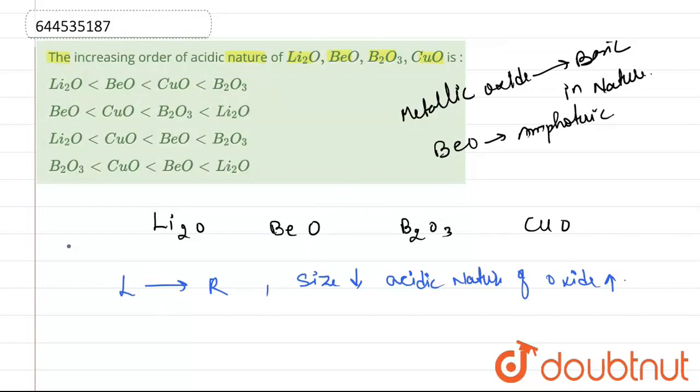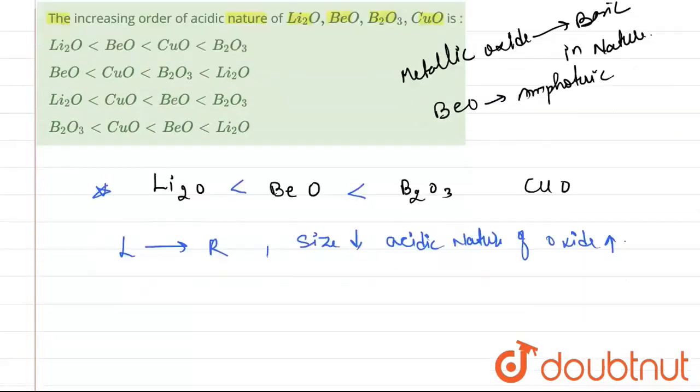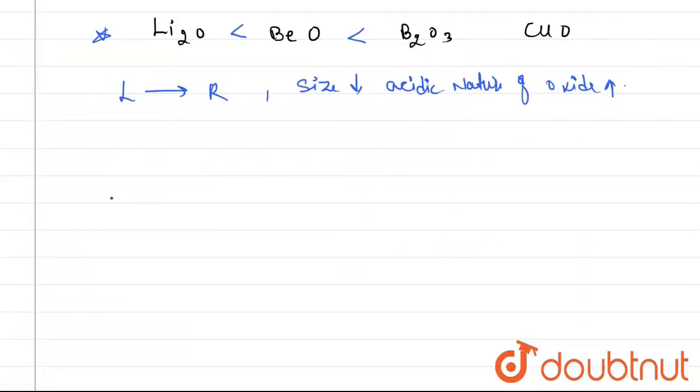So if we rewrite our order corresponding to these data, first we have Li2O, it should be least as it is most basic. Then we are having BeO, then sorry, it is not BeO. So if we write the correct order in sequence, this sequence is not correct.